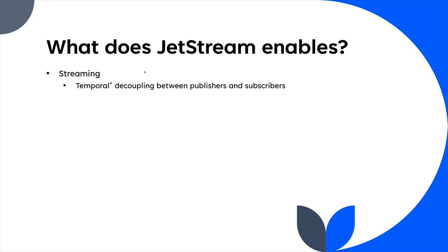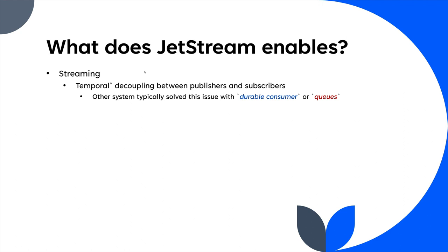What you want is to decouple the publisher and the subscribers from being online at the same time — to decouple that time dependency. This is called temporal decoupling. Other messaging platforms like RabbitMQ, Kafka, and similar systems solve this problem by using a durable consumer or by using queues. In Core NATS, queues were really for distributing load — having multiple subscribers to the same queue meant NATS would send a message to one of them — but that's for distributing load, not time decoupling.